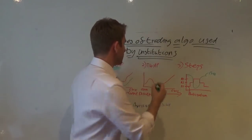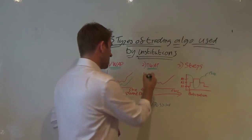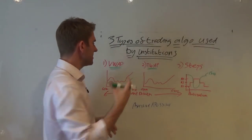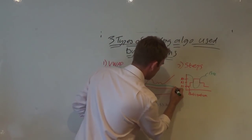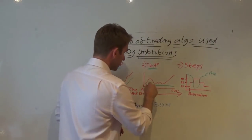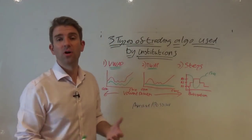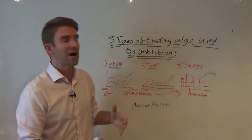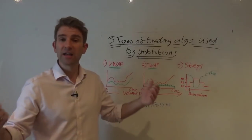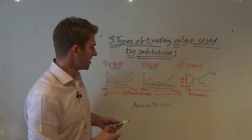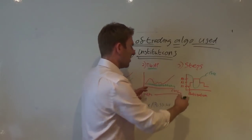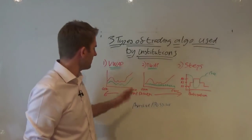Then we've got TWAP, which is Time Weighted Average Price. Imagine the same volume profile — a spike in the morning and a bigger spike towards the close. TWAP basically ignores that and just slices the order evenly throughout the whole day, accepting whatever price it gets. It splits the order into segments and executes at set intervals — depending on the algo and the size, that could be seconds, minutes, or hours.